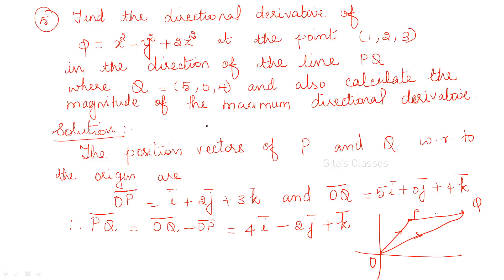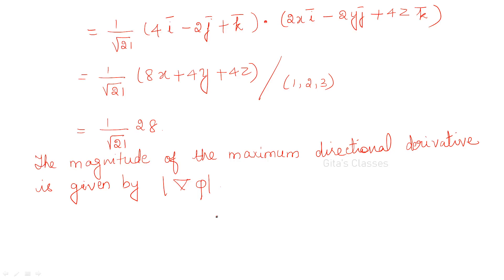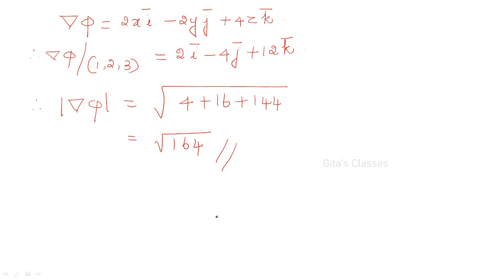This vector a-bar = 4i − 2j + k is our direction. a-cap = (4i − 2j + k) / √21. Find del phi for the given phi, substitute the given point, and the directional derivative is a-cap dot del phi. The magnitude of the maximum directional derivative is |del phi|.